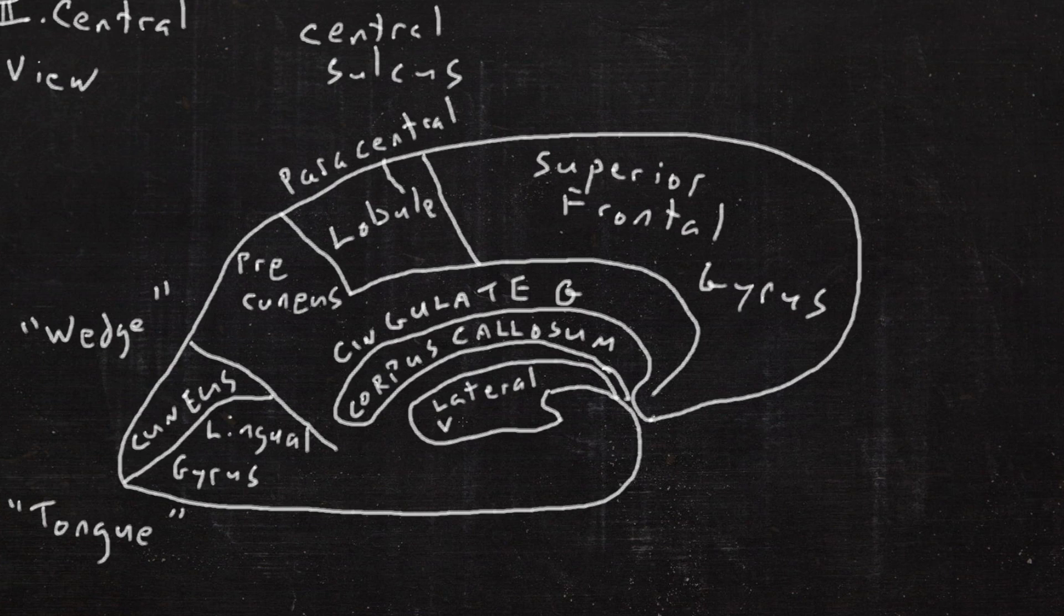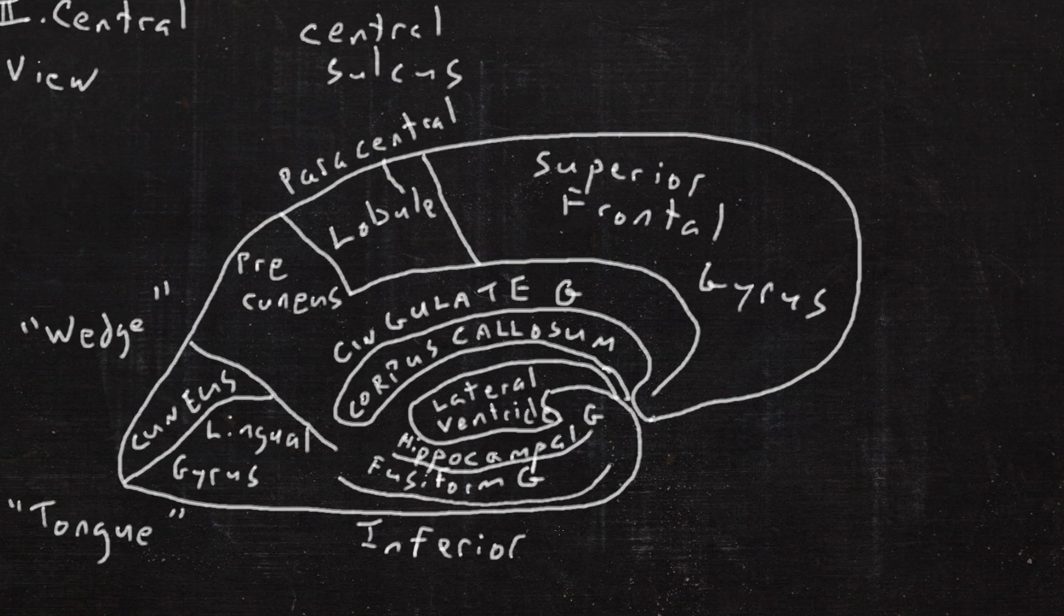Then in the lateral ventricle, the very center, underneath that we have the hippocampal gyrus, the fusiform gyrus, and the inferior temporal gyrus. The little thumb is the uncas.